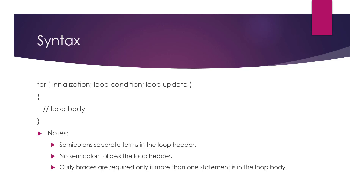The syntax uses the for keyword, and then in parentheses we have three statements. The first one is initialization — we are initializing a loop variable. Second, we have the loop condition; if this condition becomes false we exit the loop. Third, we update the loop variable. Notice that each one of these statements is separated by a semicolon: initialization semicolon, loop condition semicolon, then loop update.